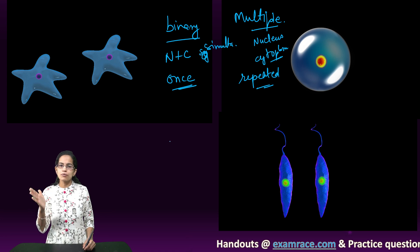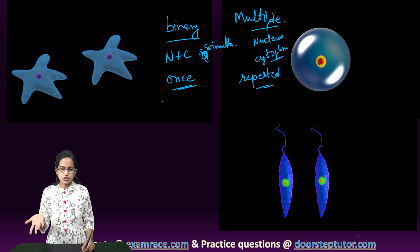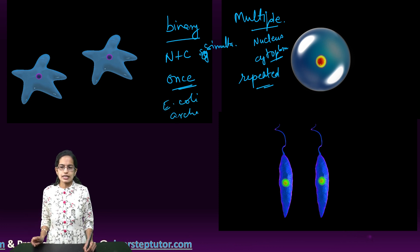Coming on to examples for binary and multiple fission. Binary fission, as we already have the two examples here: amoeba, leishmania. Besides that, E. coli, we have archaebacteria, that is another example.